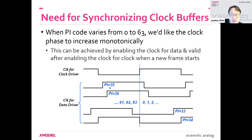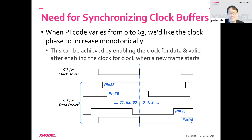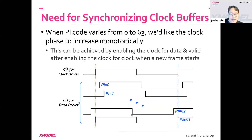If you change PI from 0 to 63, the PI corresponding to, say, step 35 might have the earliest edge. As you increase, the clock phase increases, but at some point you have to wrap back to 0, and the boundary can change depending on parameters you don't have control over in real circuits. The synchronizing clock buffer ensures that PI code 0 always has the earliest phase and PI code 63 always has the latest phase.